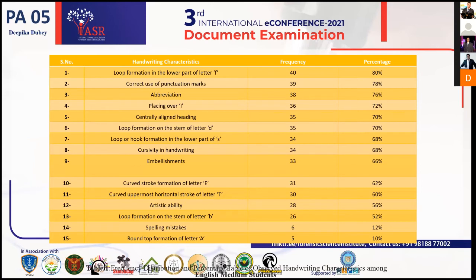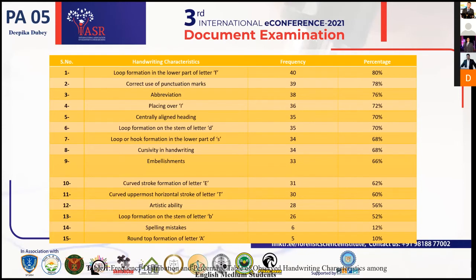This table represents the occurrence of these characteristics in English medium students. Loop formation in the lower part of letter F was found in 40 out of 50 English medium students. Correct use of punctuation marks was seen in 39 out of 50 students. The most prominent characteristics showing the most variation between both mediums were: loop formation in the lower part of letter F, cursivity — with 34 out of 50 English medium students writing in cursive — and artistic ability, with 28 out of 50 English medium students demonstrating artistic ability.